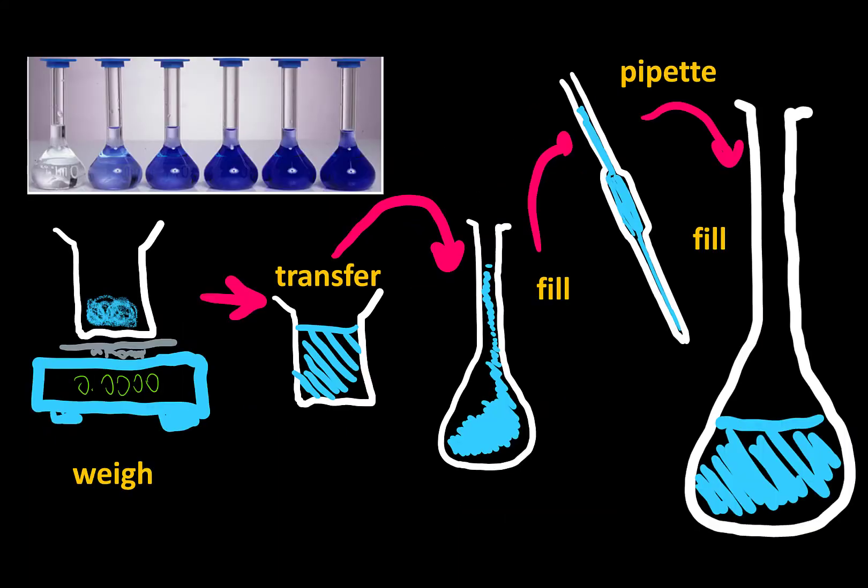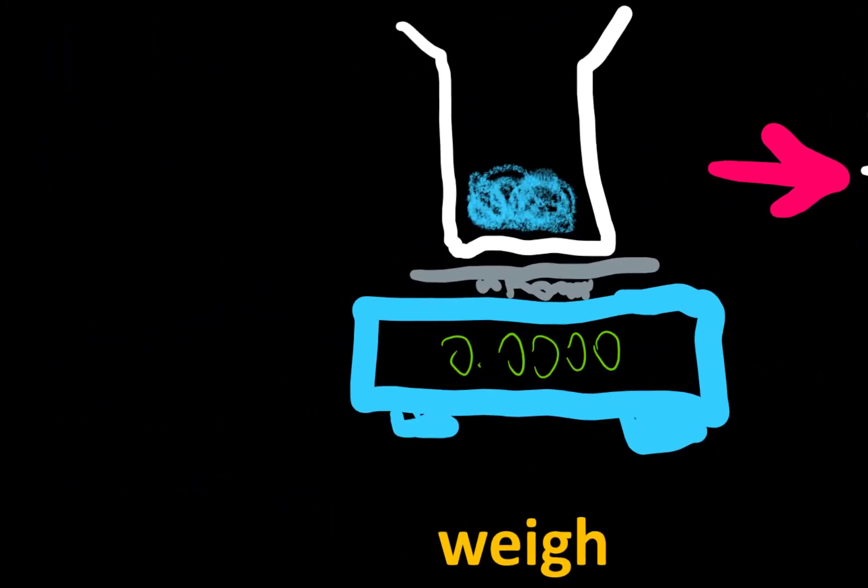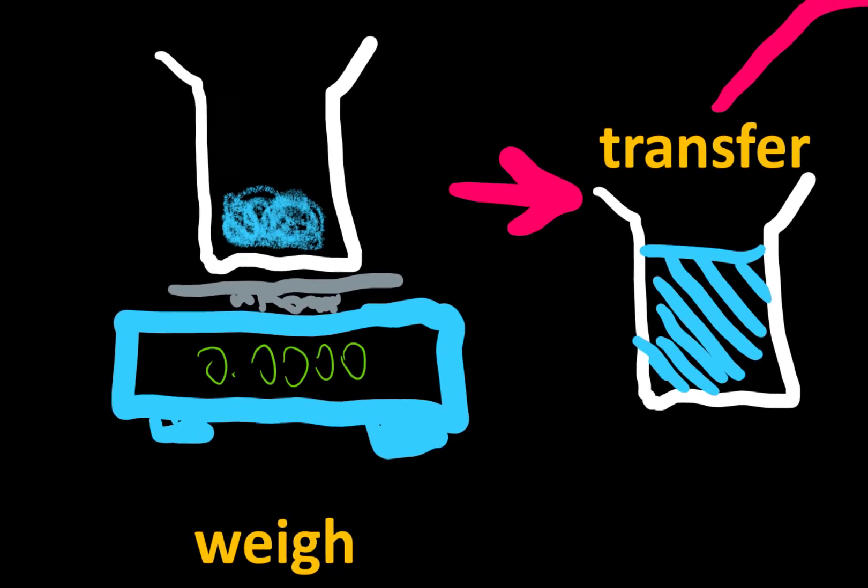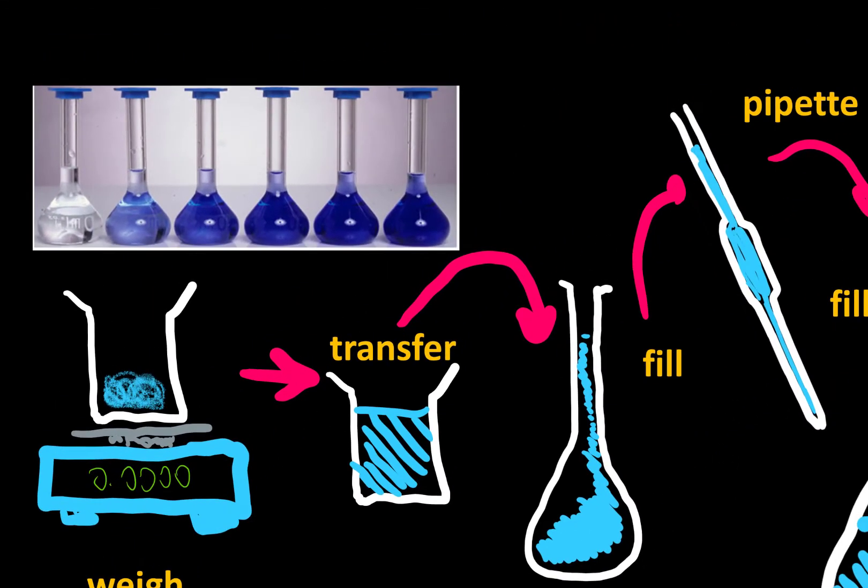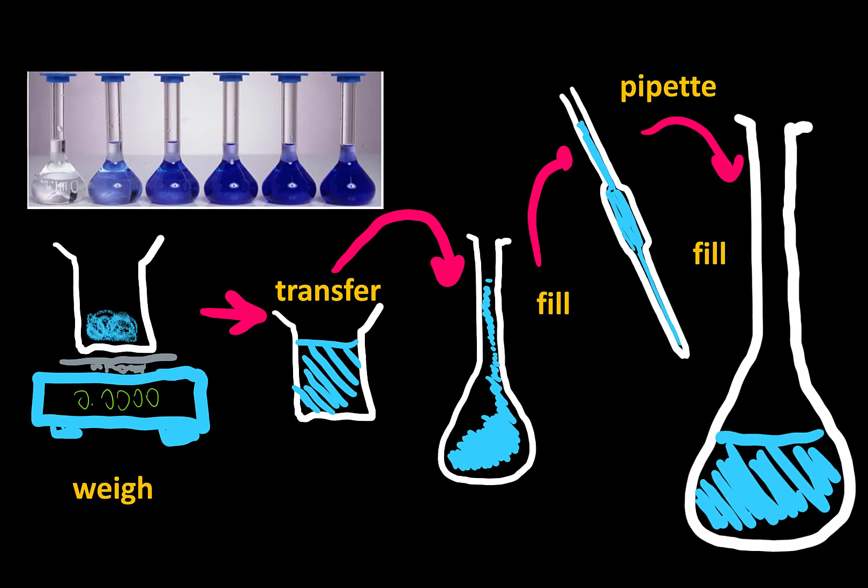I discussed this in a previous video, the idea of making up a calibration curve. In order to do this you'll probably start by weighing out a certain mass of a substance and by way of a quantitative transfer you'll move that solid material into a known volume. From there you'll use a pipette or a bunch of pipettes to transfer different quantities into your final volume which will make up the solutions.